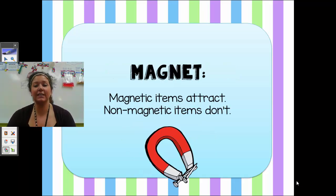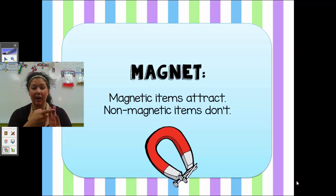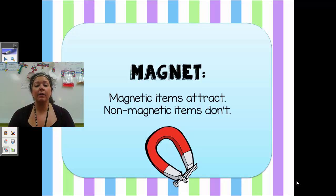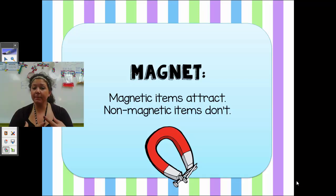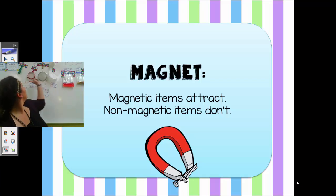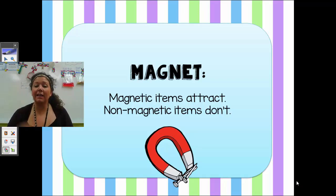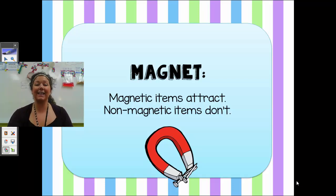The next thing we can use to separate a mixture is a magnet. If you think back to a couple weeks ago, we learned about the three kings of Nick — nickel, iron, cobalt — and iron has a son named steel. So those are our magnetic metals. Some items are not magnetic, like glass, paper, and plastic. Even some metals are not magnetic, such as copper and aluminum. So if I have a mixture with some magnetic and some non-magnetic items, I can use a magnet to separate them because the magnetic items will attract and the non-magnetic items will not.